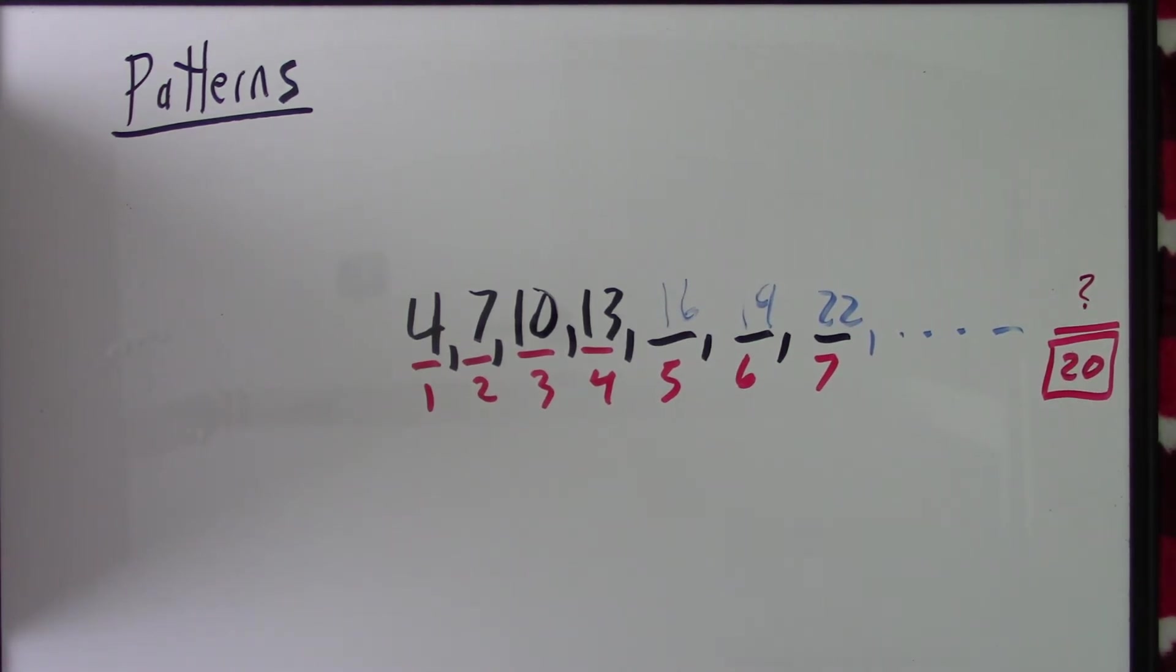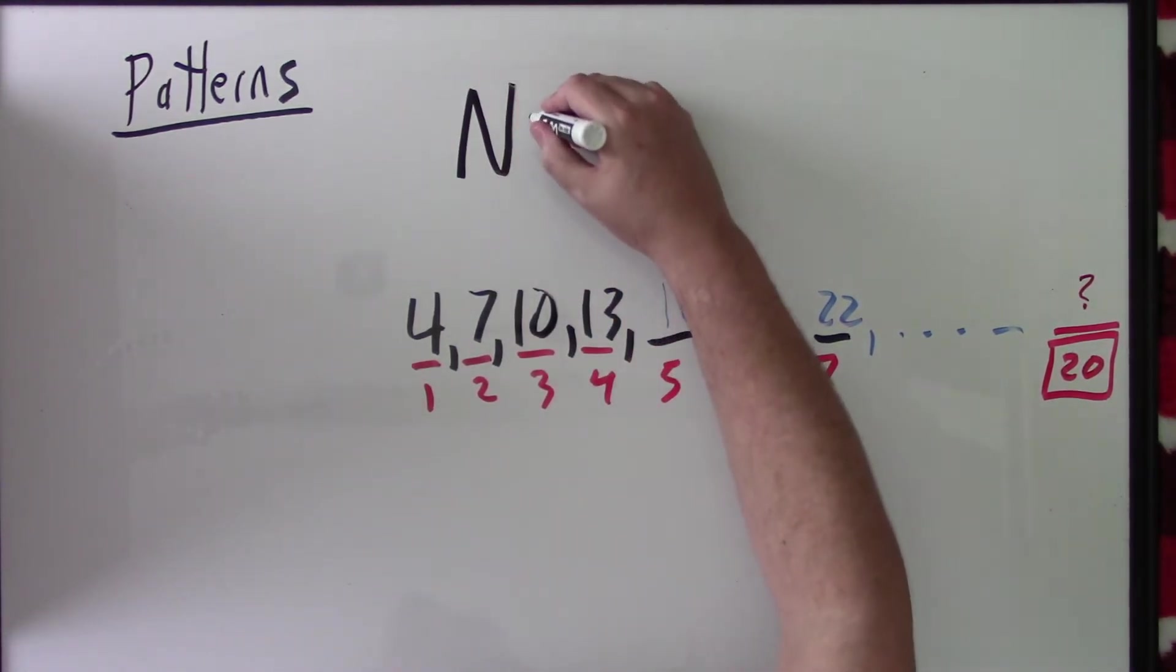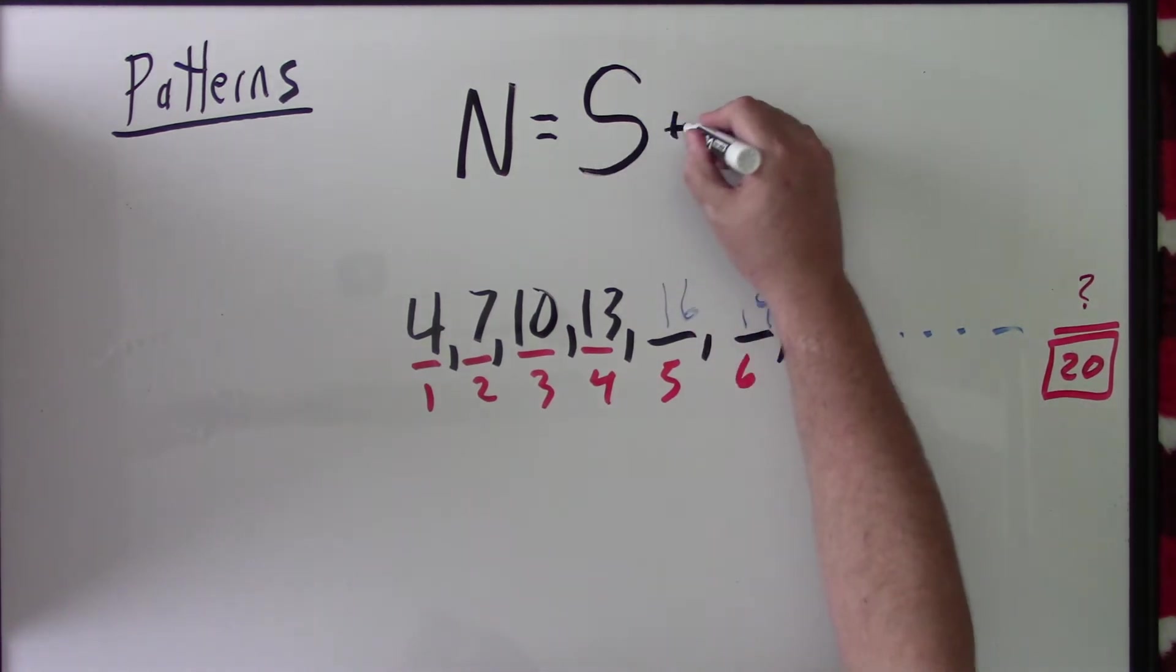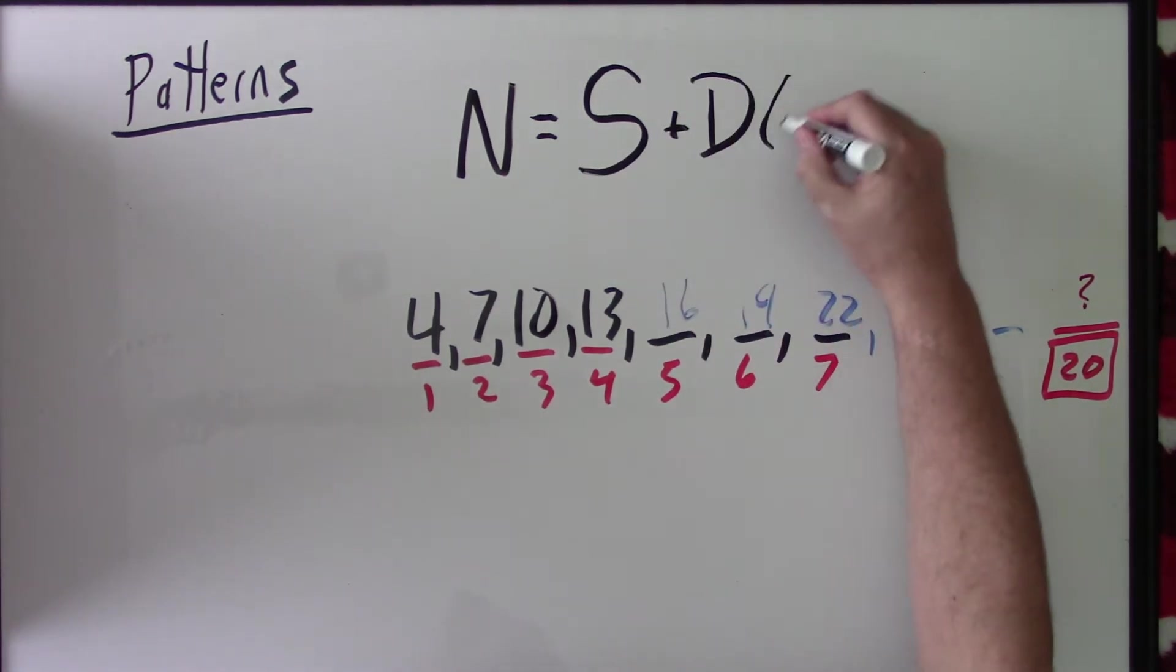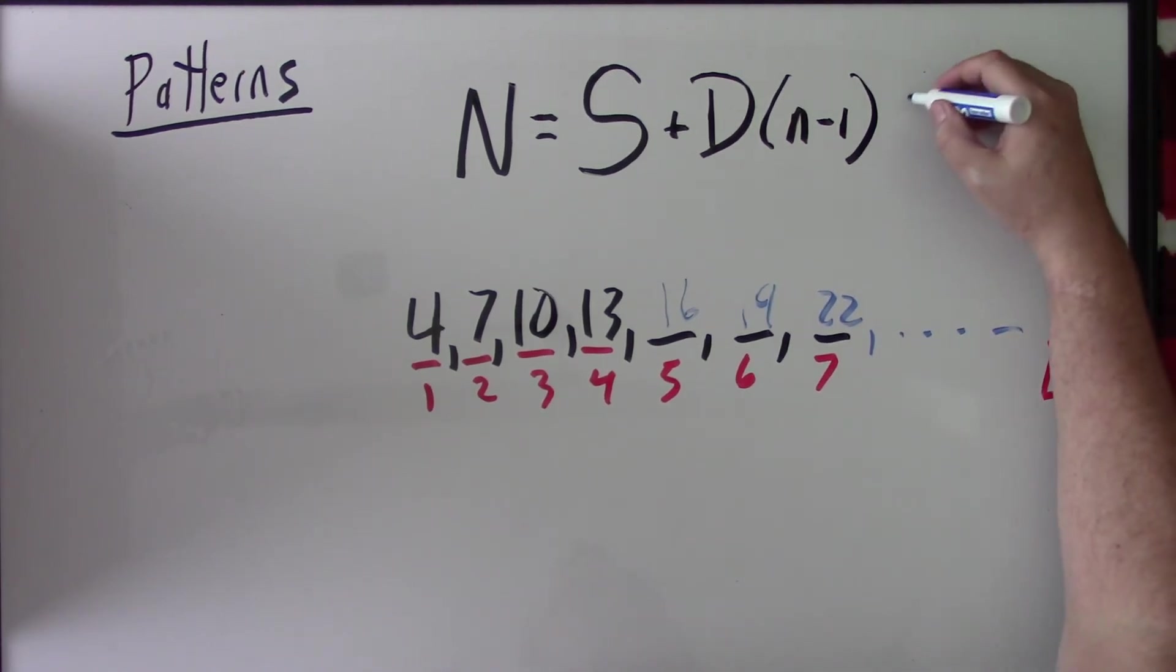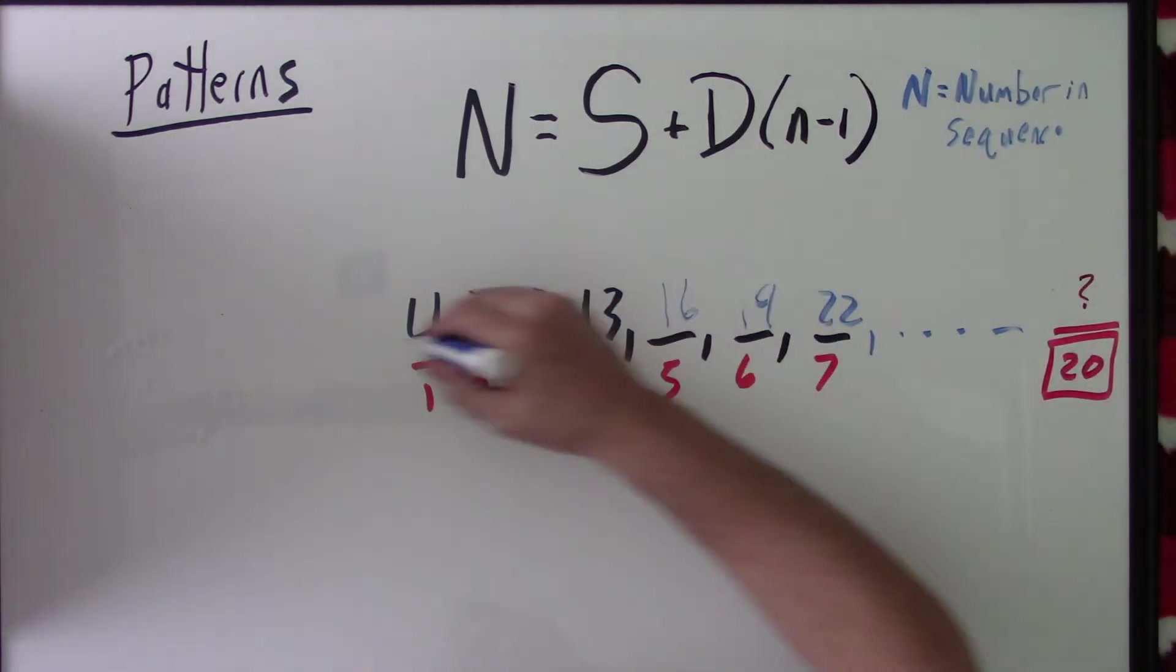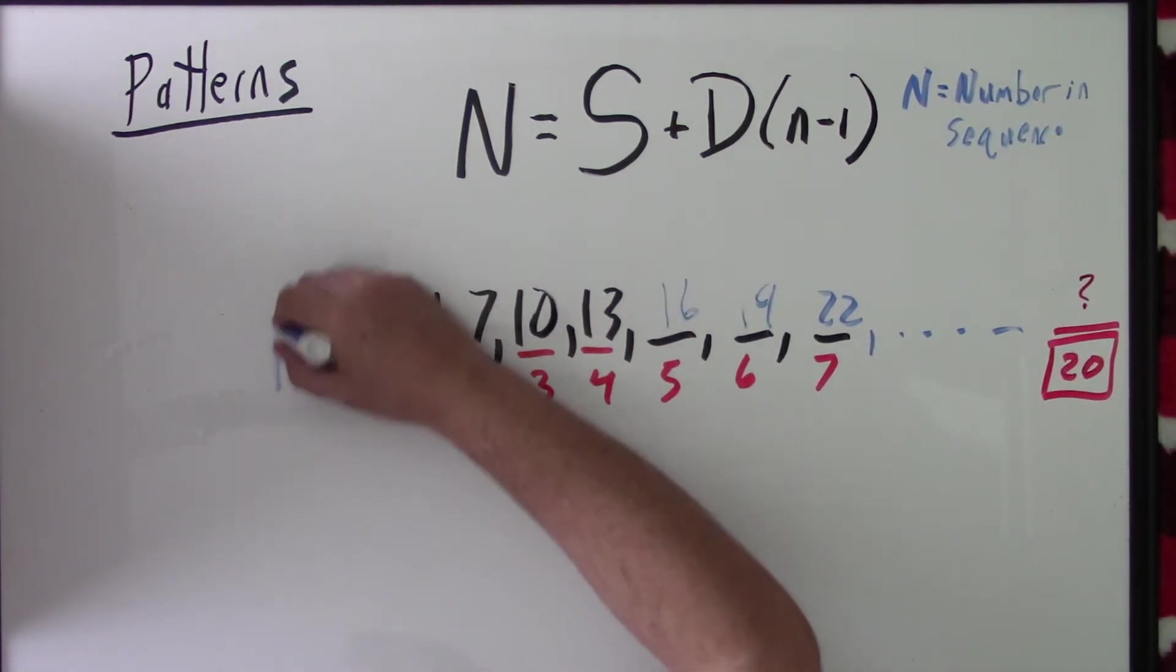Which is capital N is equal to S plus D times little n minus 1. So, the capital N is your number in the sequence. That's these numbers.